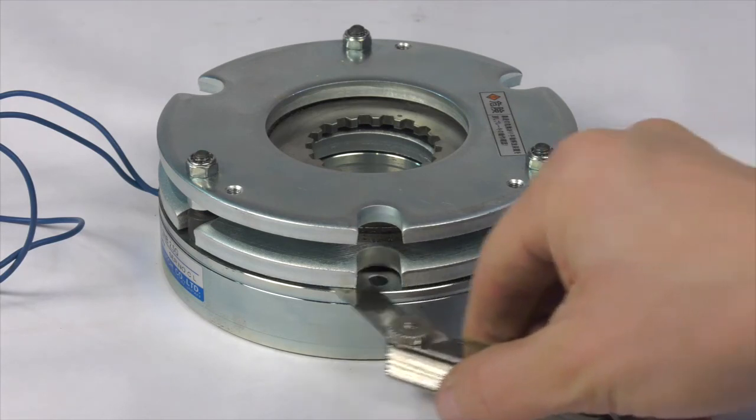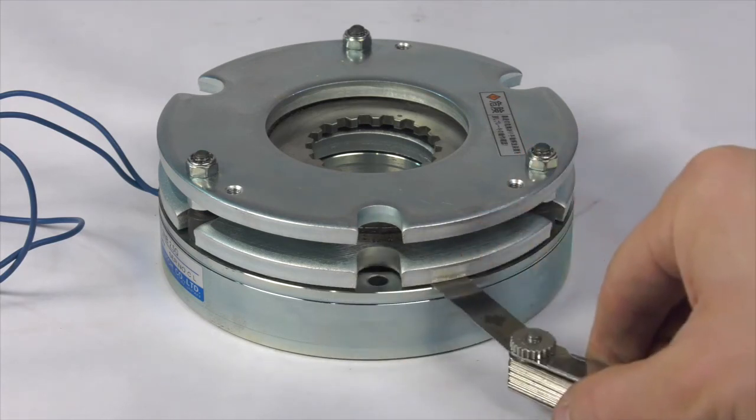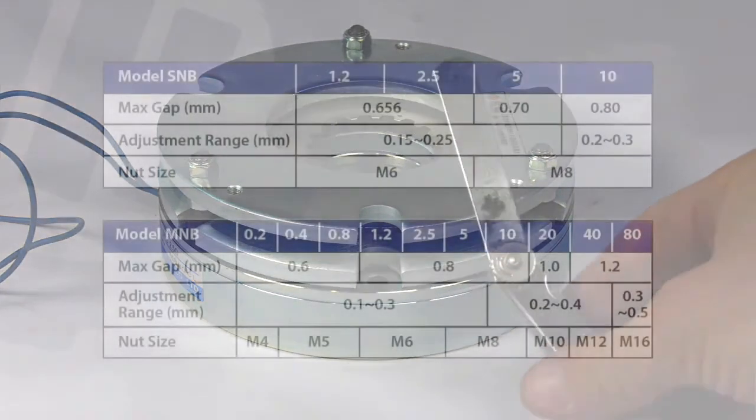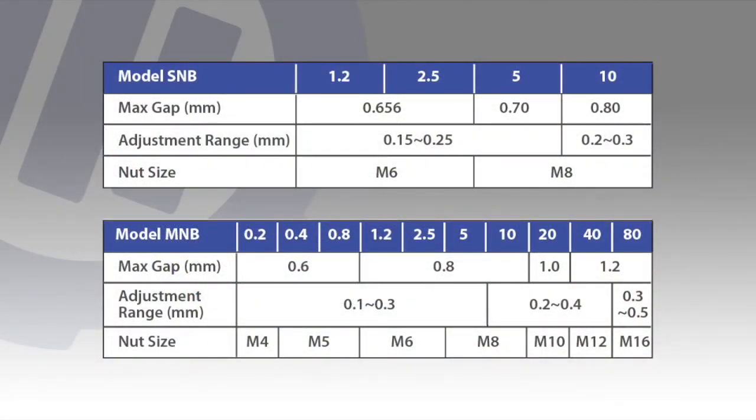Make sure that the air gap measured at all three adjustment points is within 0.5 millimeters of each other. Specific gap and adjustment range is as shown.